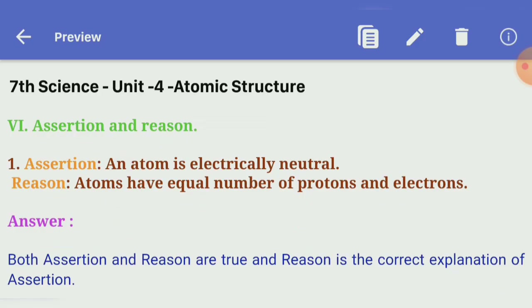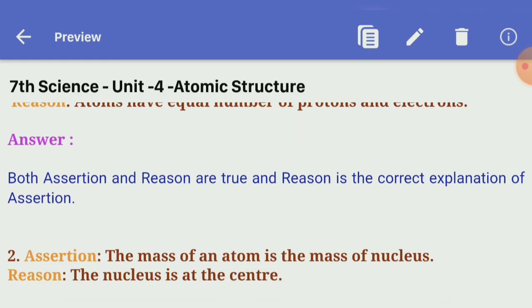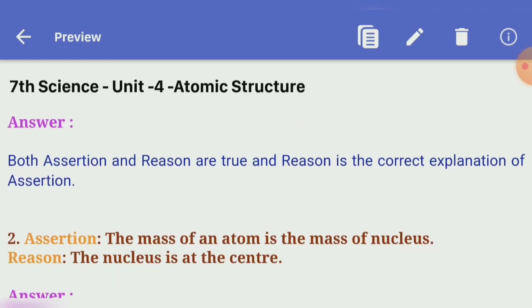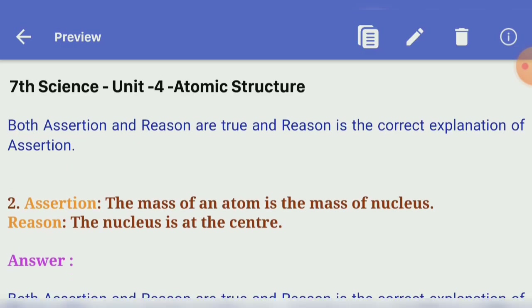Sixth section: Assert and Reason. First: Assertion — an atom is electrically neutral. Reason — atoms have equal number of protons and electrons. Answer: both assertion and reason are true, and reason is the correct explanation of assertion.